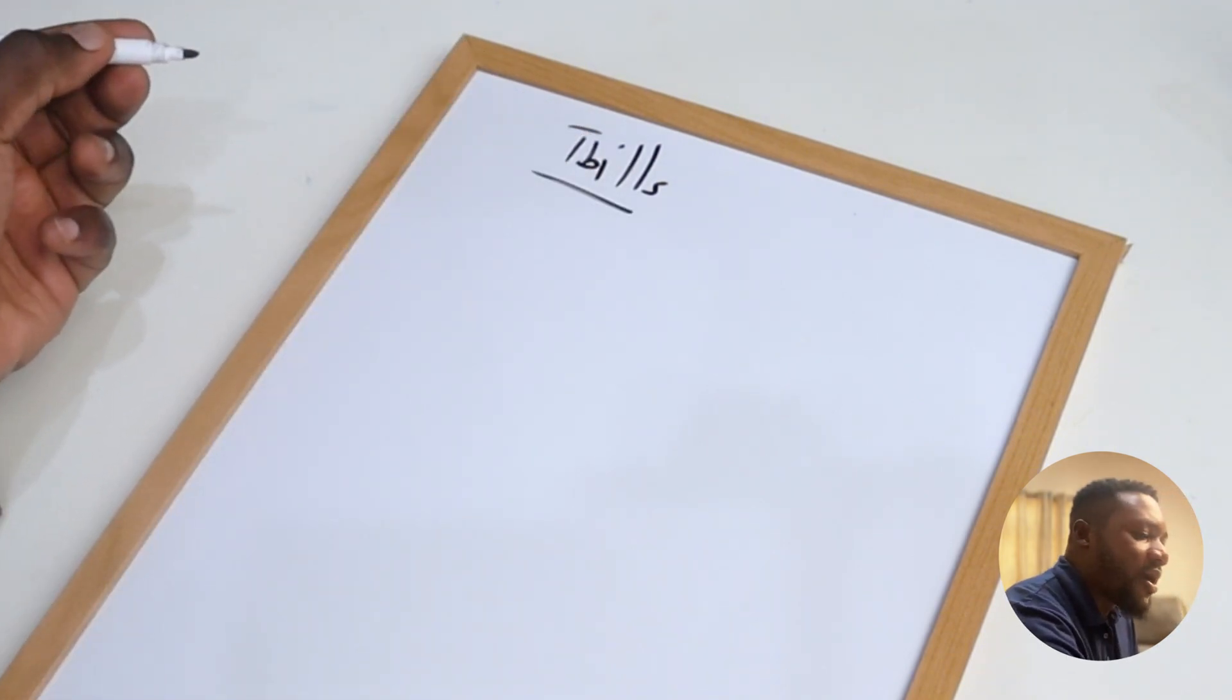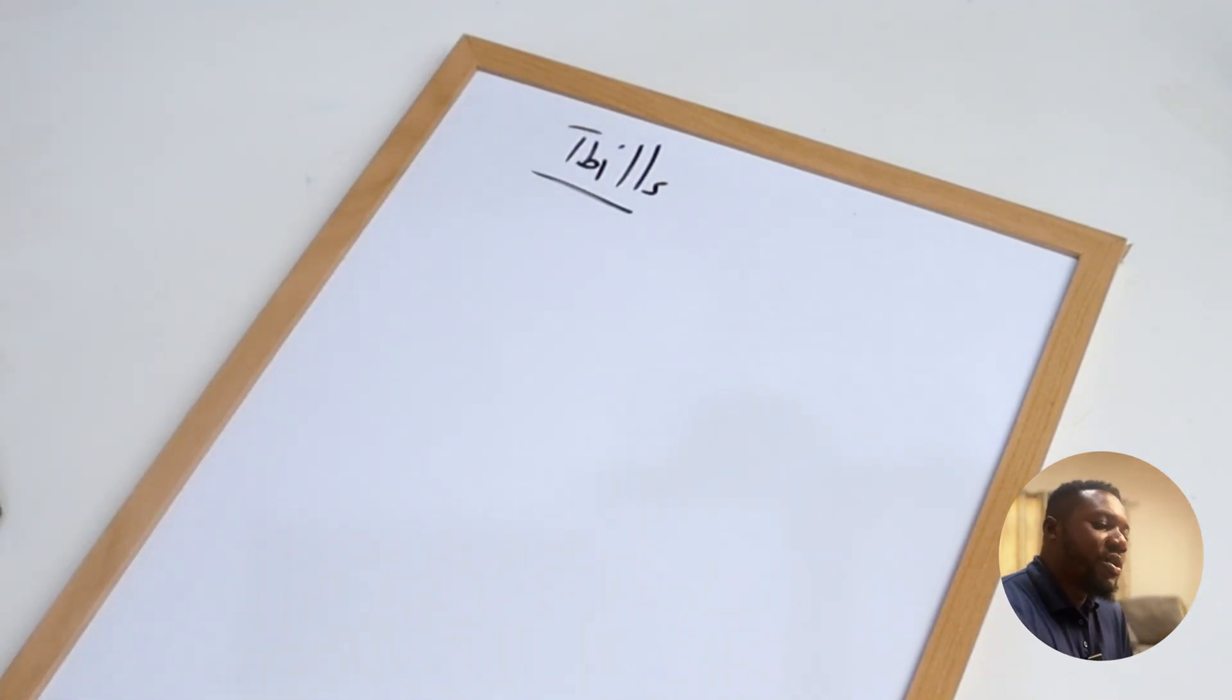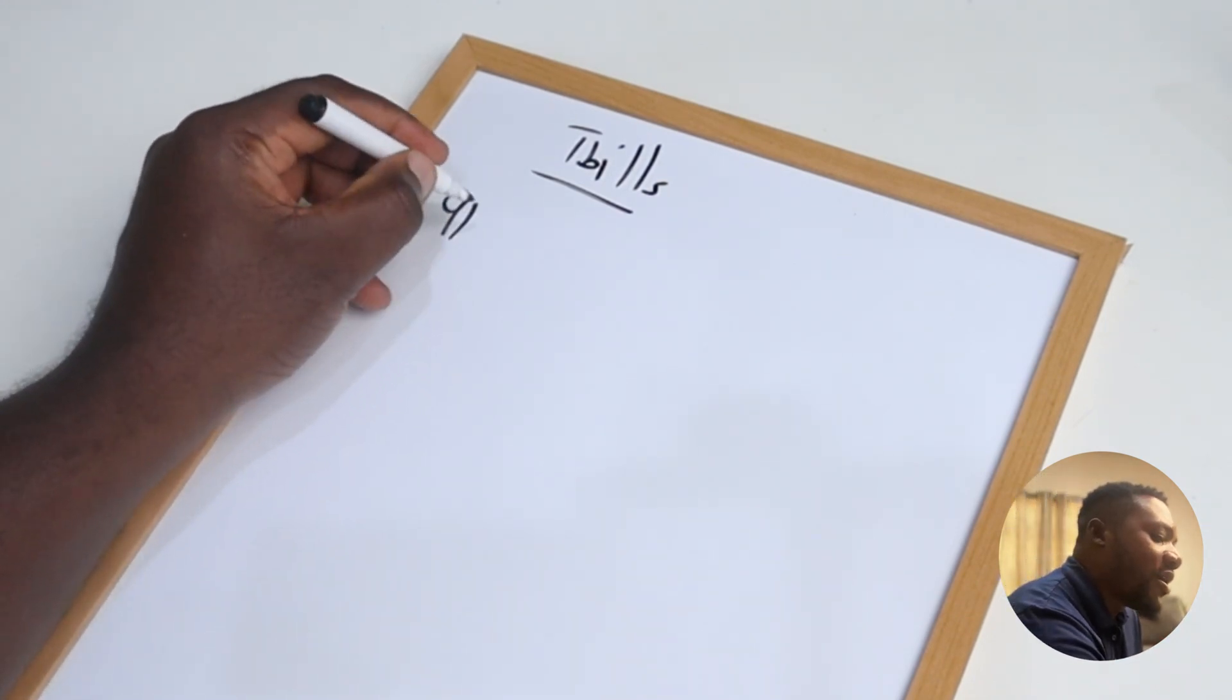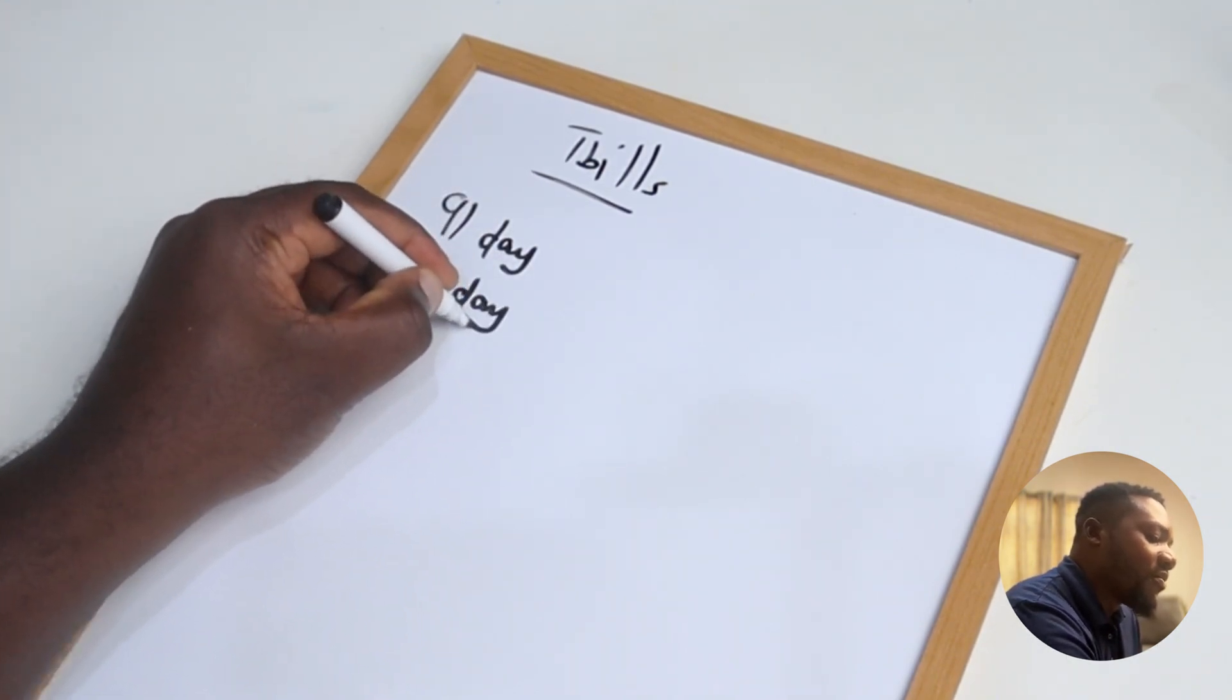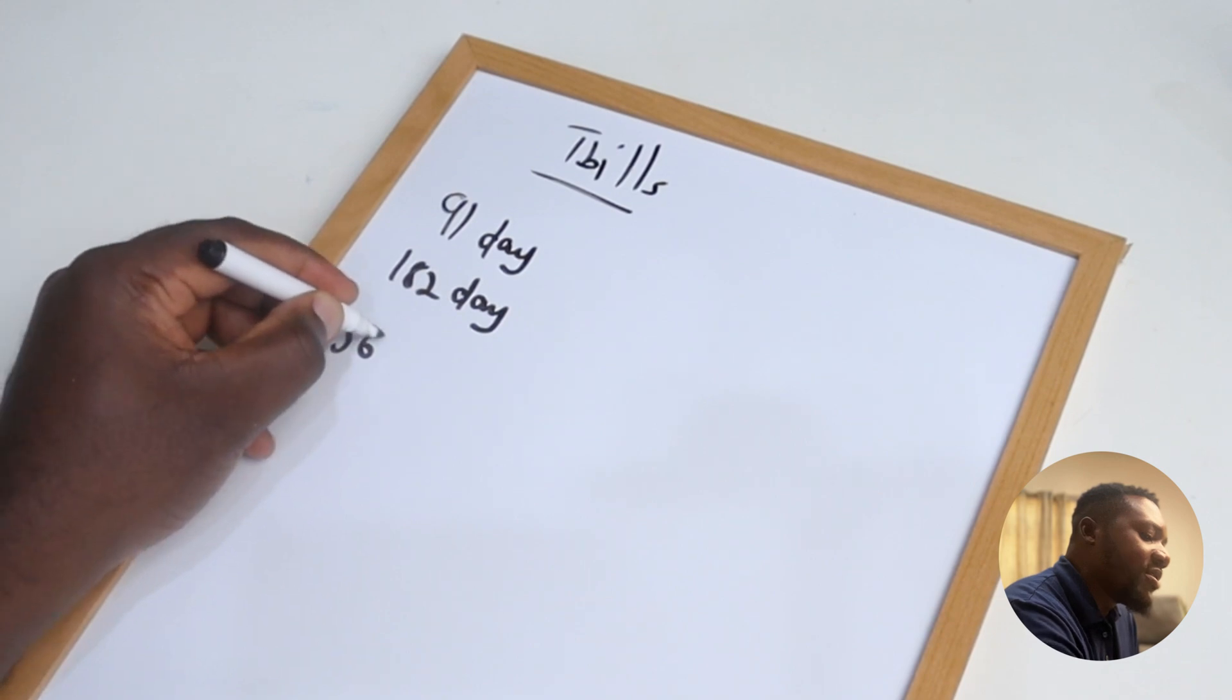Now if you walk into the bank to buy T-bills, they're going to give you three options, the three popular options. They're going to give you the 91 day, the 182 day, and then the 364 day bill.